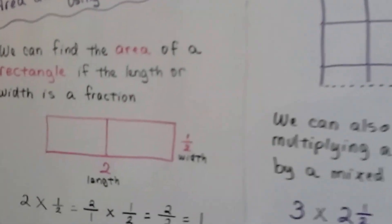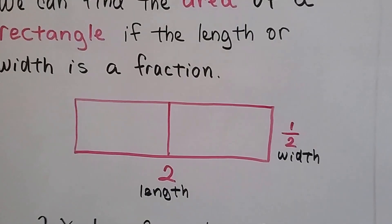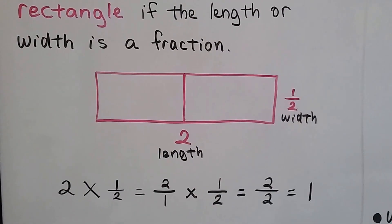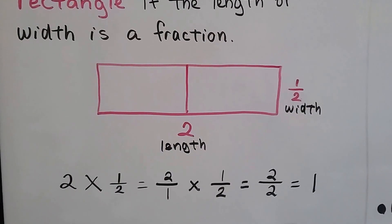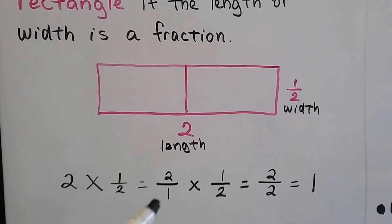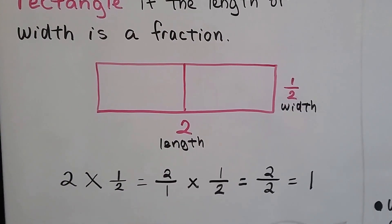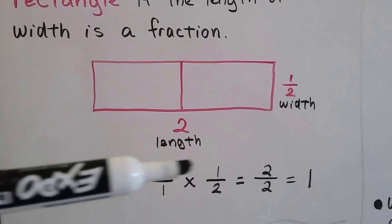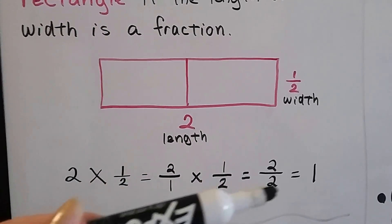We can find the area of a rectangle if the length or width is a fraction. Our length is 2 and our width is a half. We can multiply 2 times a half. We can put the 2 over a 1 to make it look like a fraction, so it's equivalent to a fraction, and we can just multiply straight across.